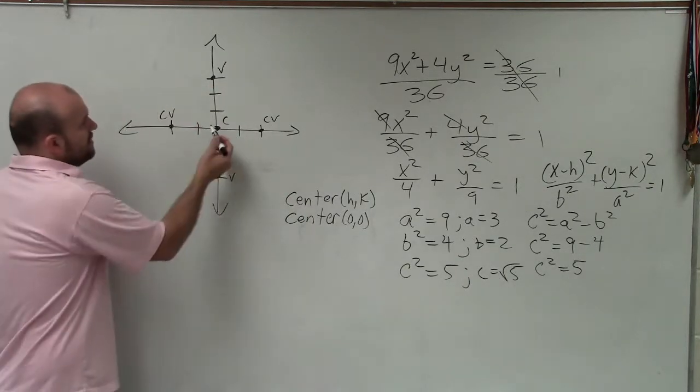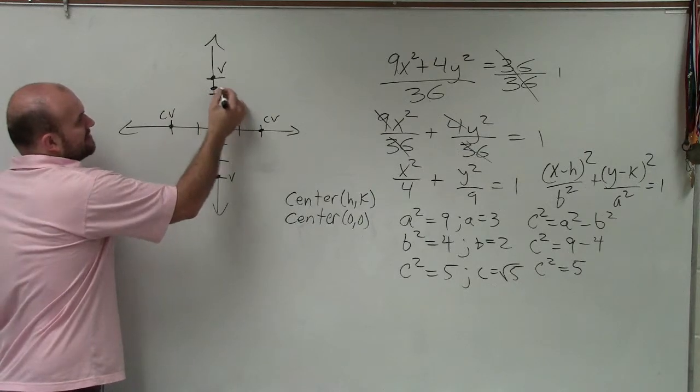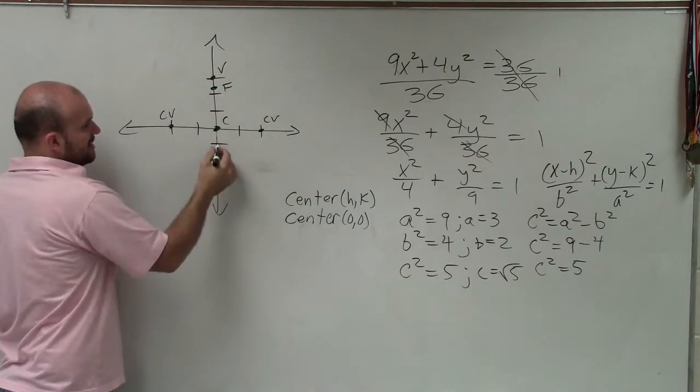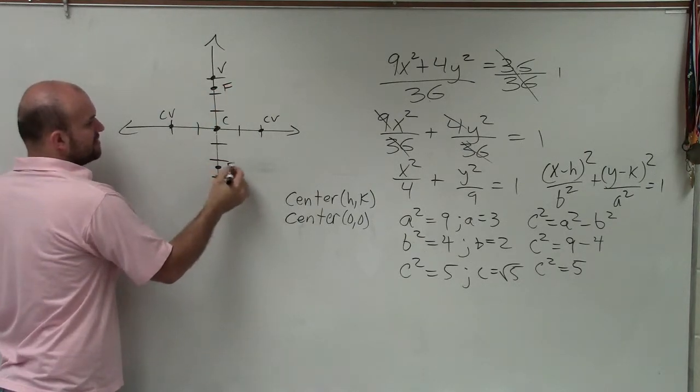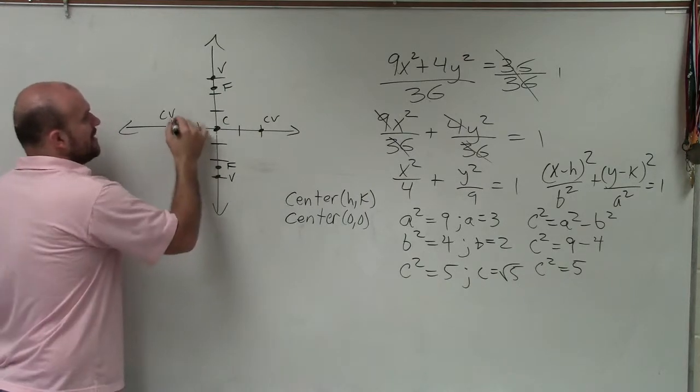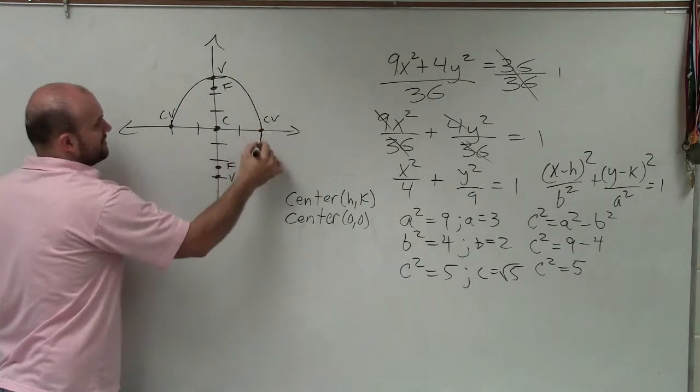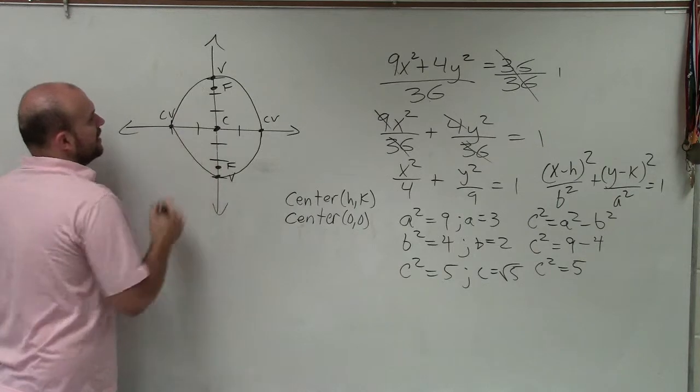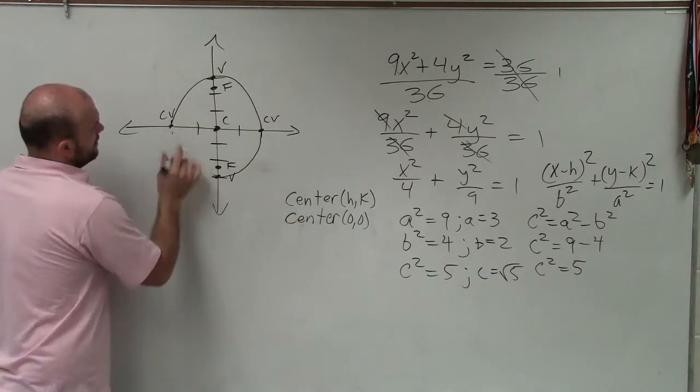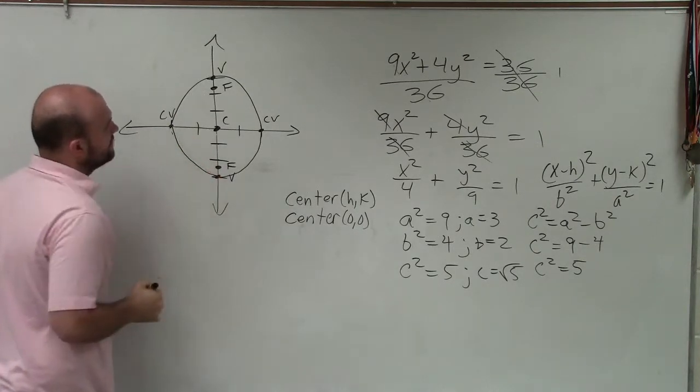And that's really all we want to do, is 1, 2, and just kind of estimate. There's going to be one foci, and there's going to be the other foci. So now I have enough information to graph the ellipse, as I just connect the co-vertices and the vertices.